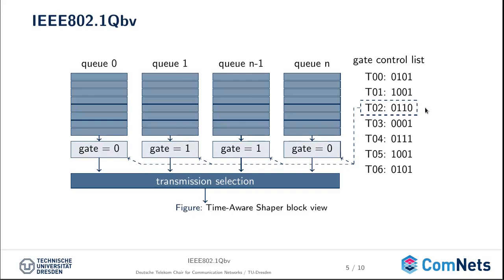In the TAS or time-aware shaper standard, you can define the time slots of the list with a granularity of one nanosecond — this is really precise. This means you can select the transmission time of each packet in your network with a granularity of 100 nanoseconds.